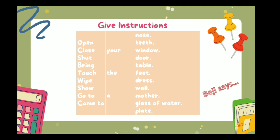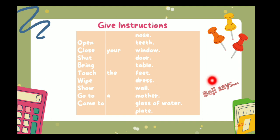You can play 'Bhaji says' with these instructions. You say 'Bhaji says open the window' and your friends follow the instruction when you have said 'Bhaji says'. Then if you say 'touch the nose' without saying 'Bhaji says', they don't have to do it — and if they do, they are out. That's how you play 'Bhaji says'.